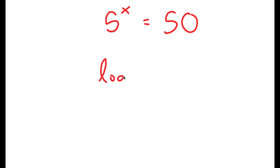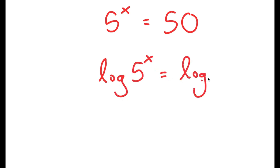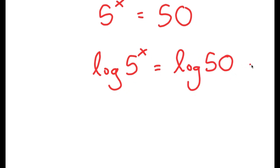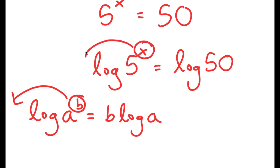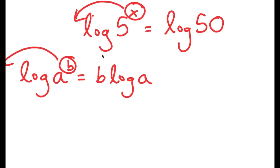So I'm going to take the log on both sides, so I get log 5 to the power of x is equal to log 50. The reason I'm doing this is because logarithms have a special property stating that if I have something in the form log a to the power of b, I can move the exponent b to the front, so this turns into b times log a. So in this case, I can move x to the front, and I get x times log 5 is equal to log 50.